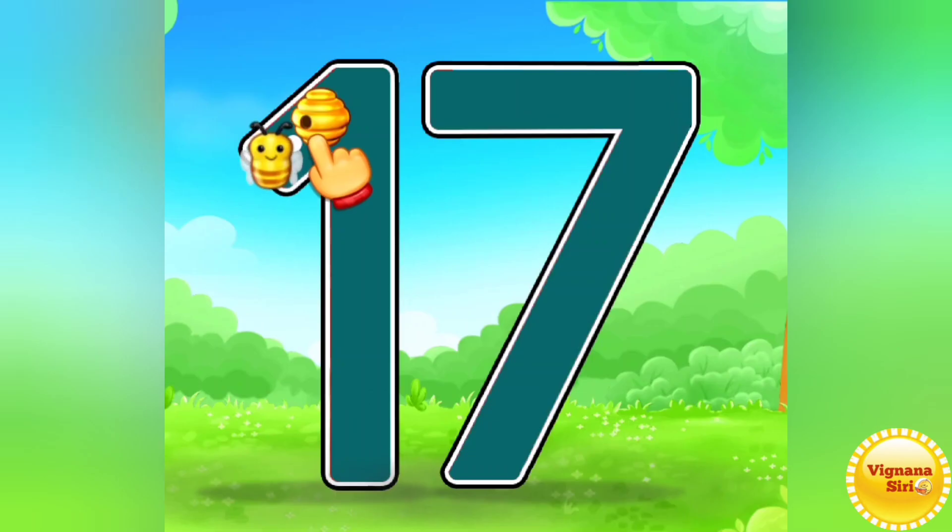First, you have to write number 1. After number 1, you have to write number 7. Did you remember? A sleeping line with a small slanting line towards downwards. That is 7, right? Yes, that is 17.